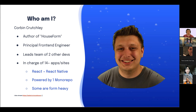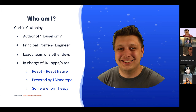Corbin is a principal front-end engineer at a small company, leading a front-end team of two devs plus himself. They are responsible for over 14 distinct applications — 14 distinct APKs, websites — all in one monorepo, entirely powered by React and React Native. The only way they manage that many applications with such a small team is through extensive code sharing. If something runs on the web it better run on mobile, and if it doesn't, they replace it with something that does — even if it's homegrown.